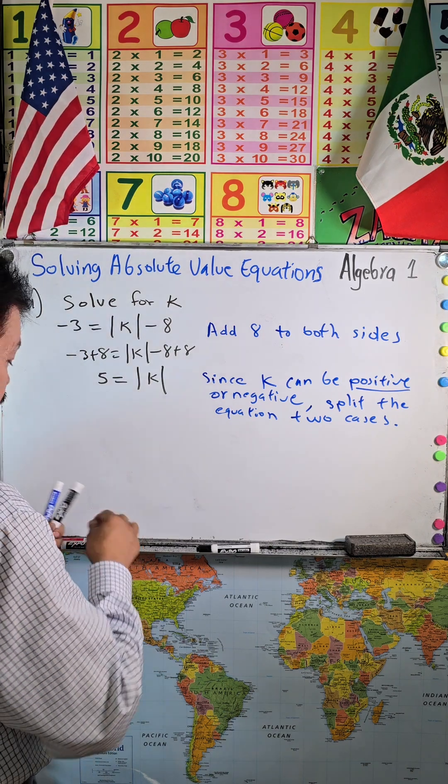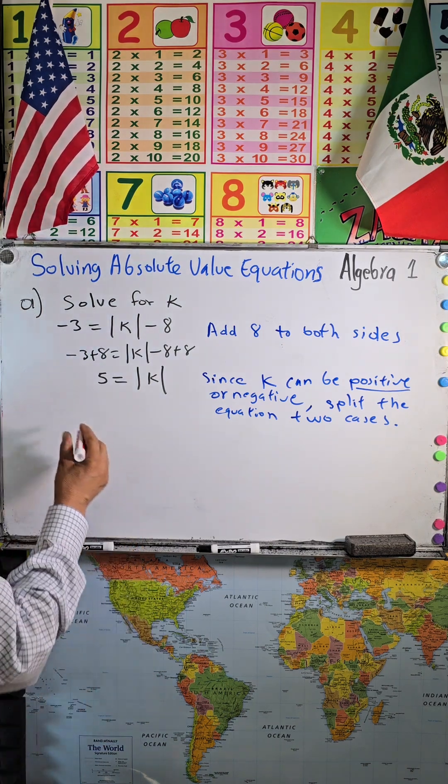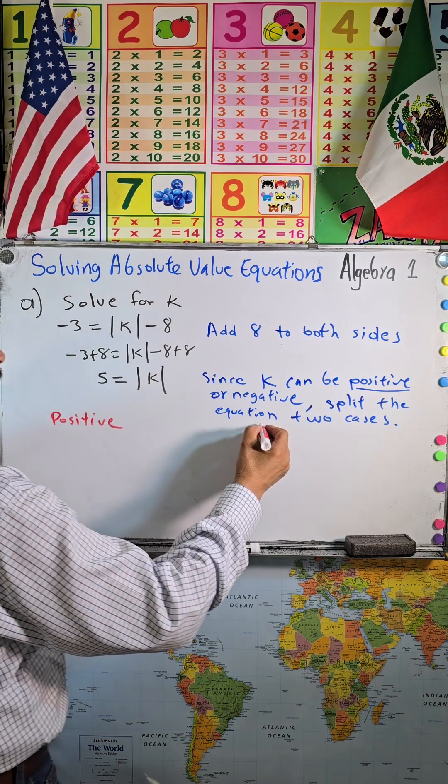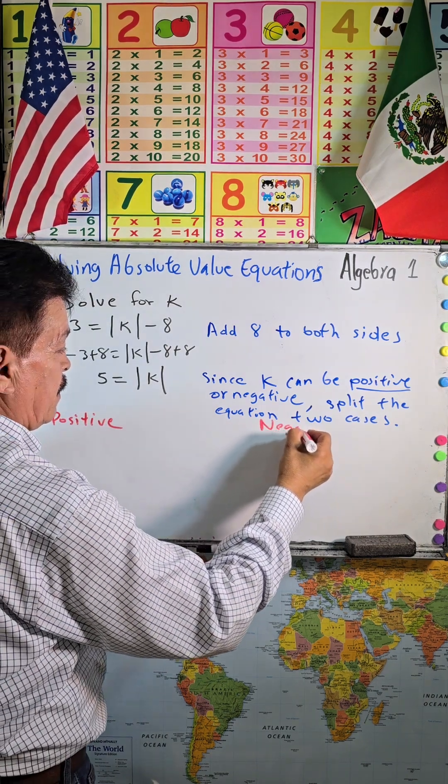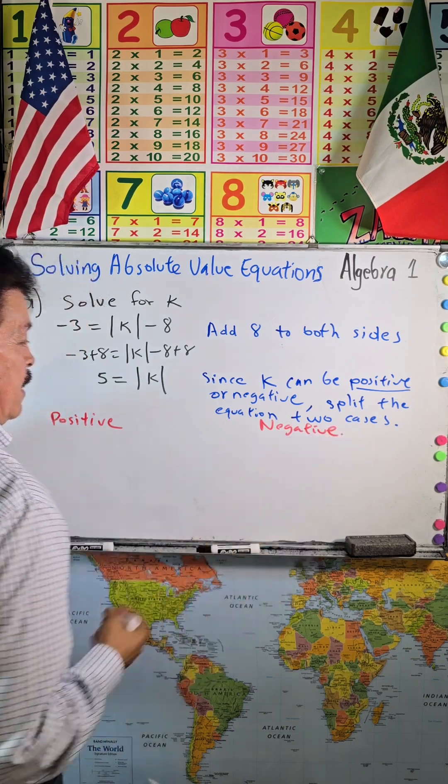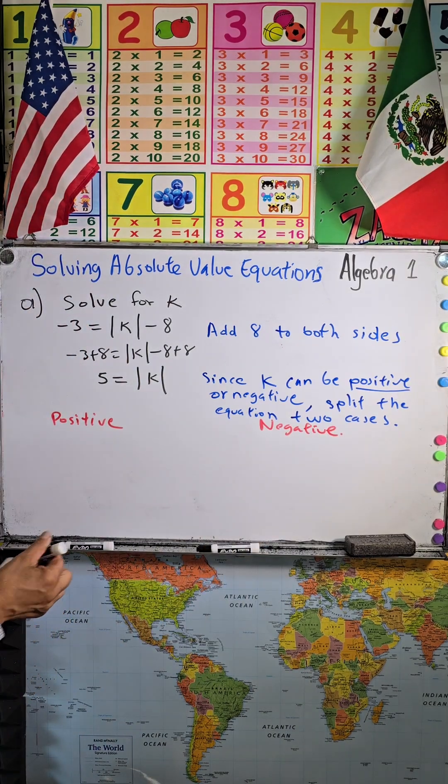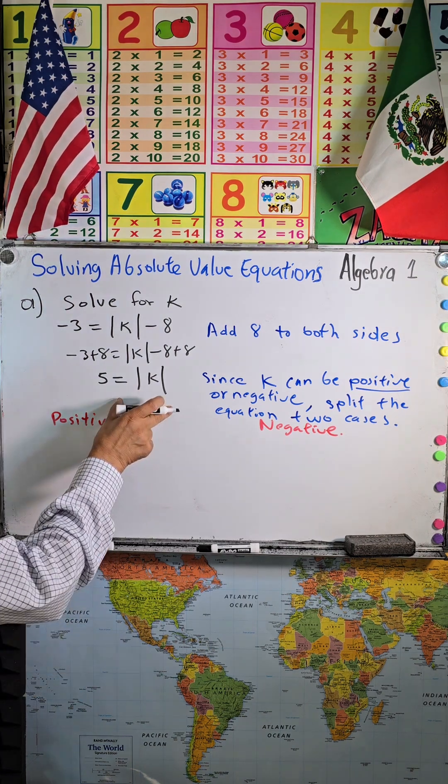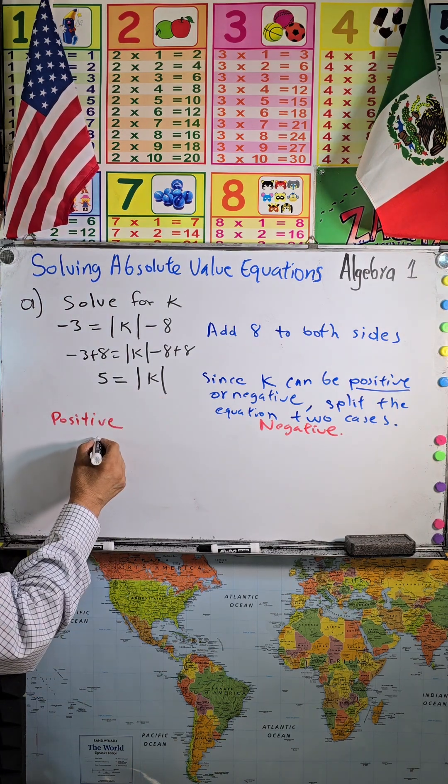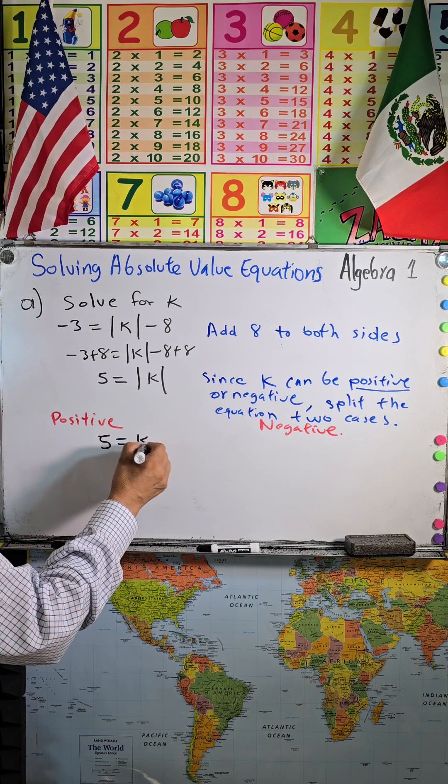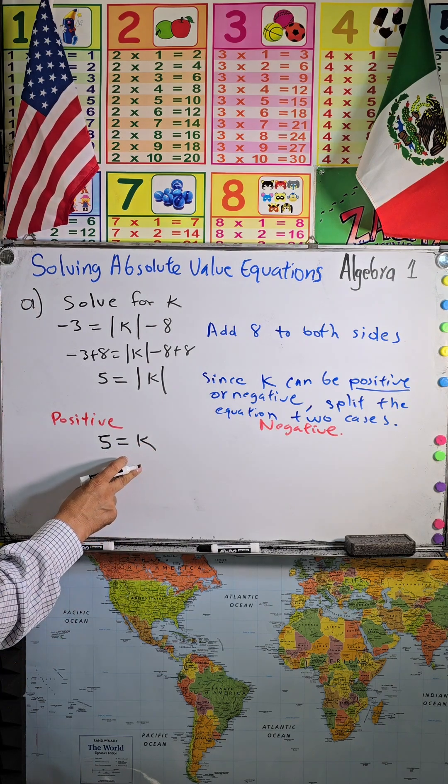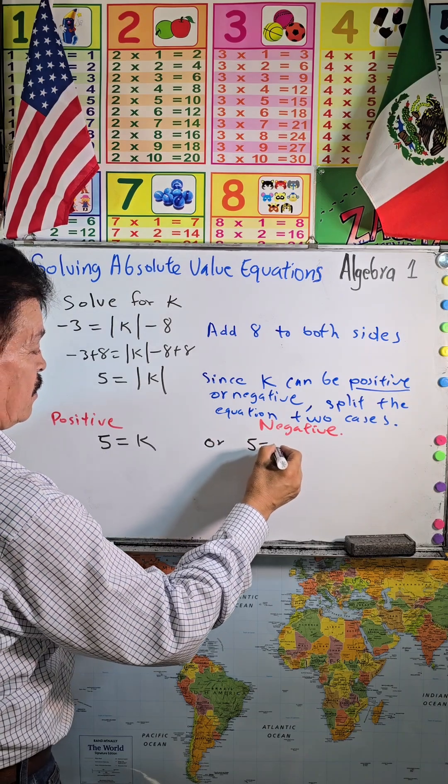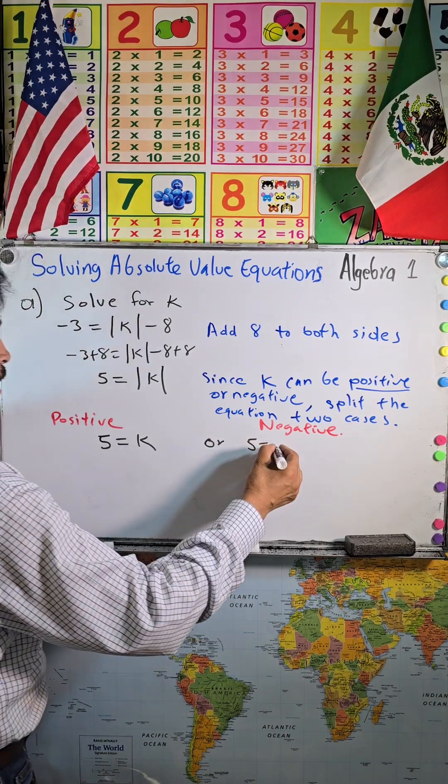For the positive case, we have 5 equals k. Or for the negative case, 5 equals negative k.